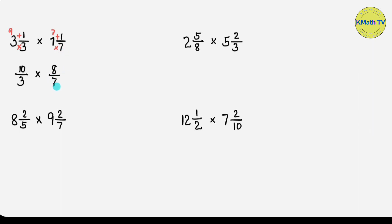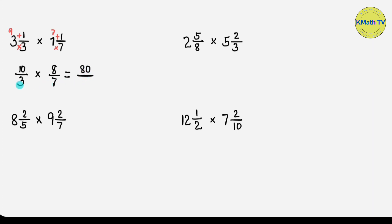We already changed the mixed numbers to improper fractions. Now the second step is to multiply. Multiply the numerators and multiply also the denominators. Let's multiply: 10 times 8 equals 80. And multiply the denominators: 3 times 7 equals 21. The answer is 80 over 21.